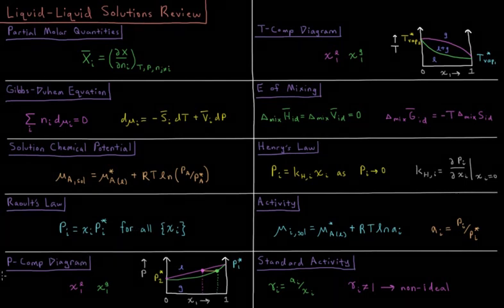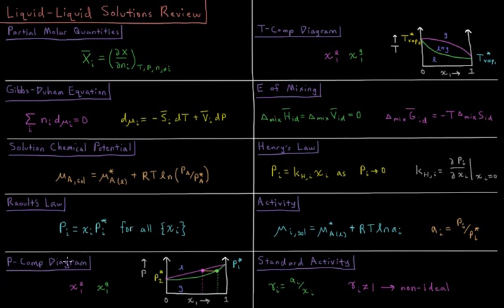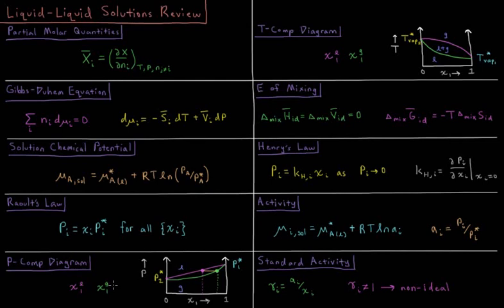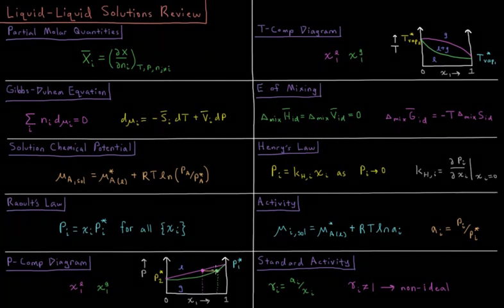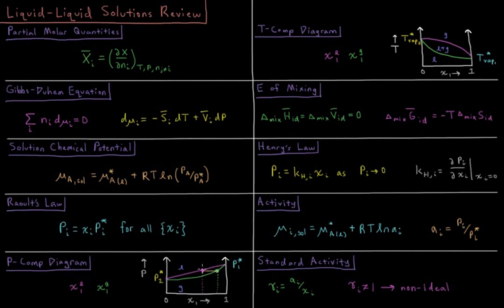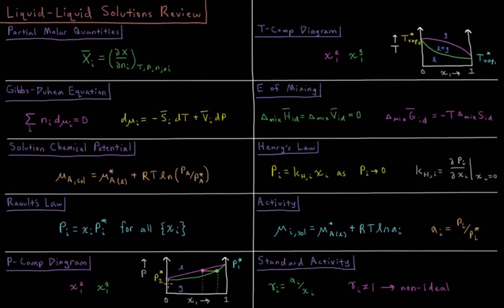With this we can build pressure composition diagrams where we look at the mole fraction of the liquid and the mole fraction of the gas for a given substance as a function of pressure. As we increase the pressure we're going to have a greater mole fraction in the gas of that substance than we do in the liquid because one of them is going to have a higher vapor pressure than the other.